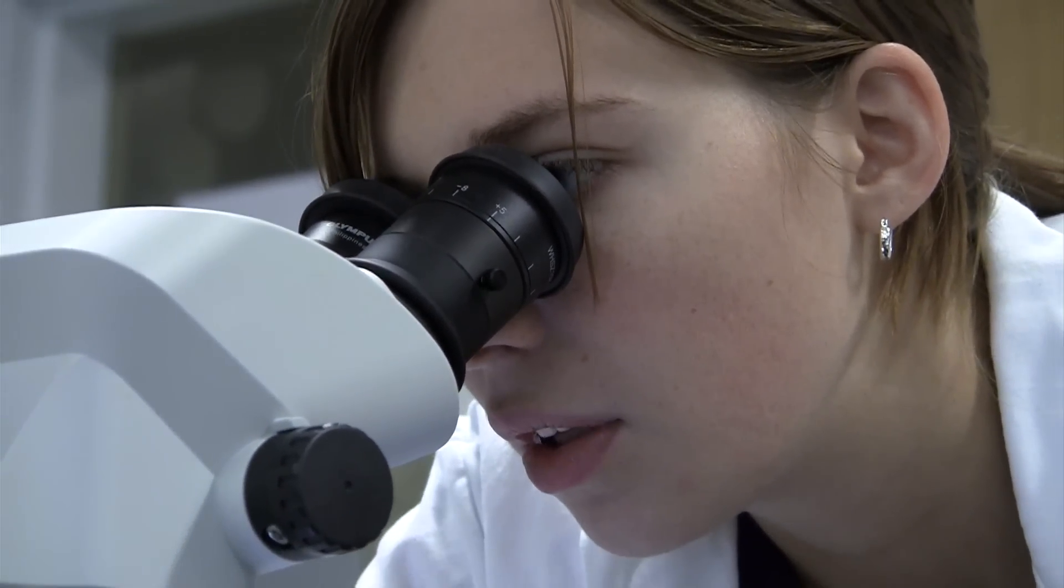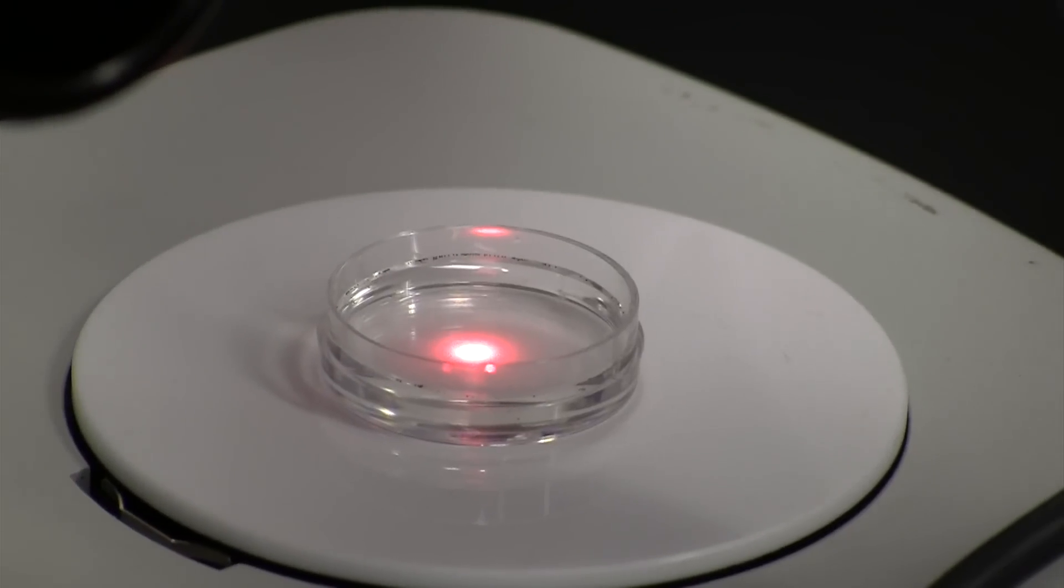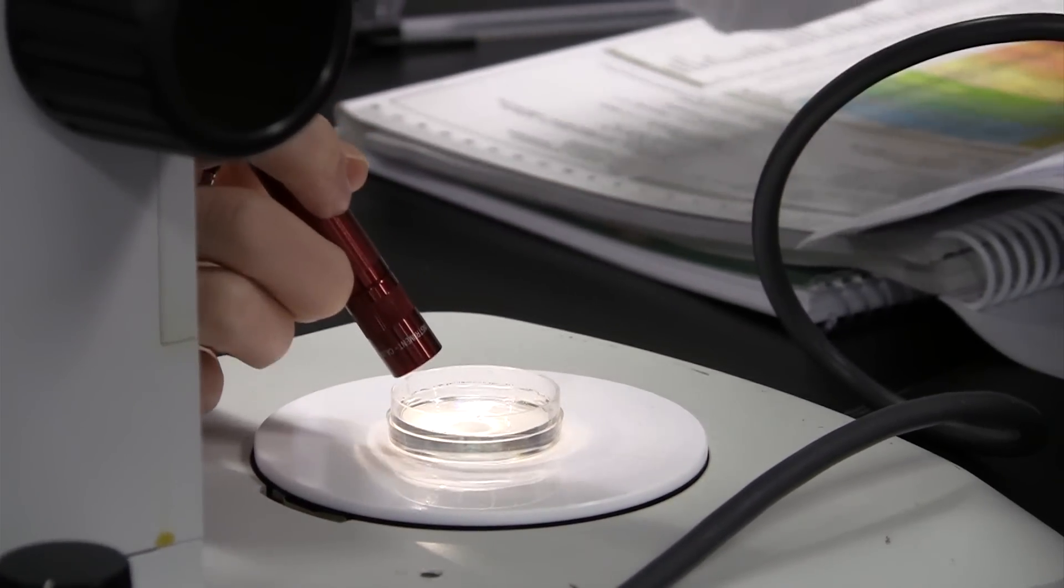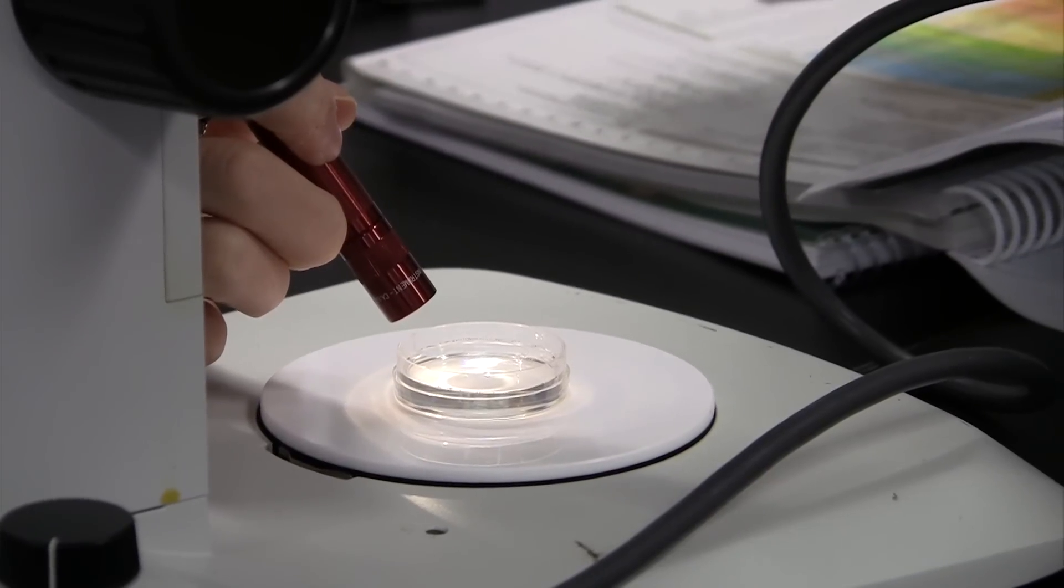They can test things like salinity of the water, the temperature of the water, so we have cold and room temperature. And we did have adult brine shrimp and napoli, which are the baby form, but we altered it to just work with the infant stage.